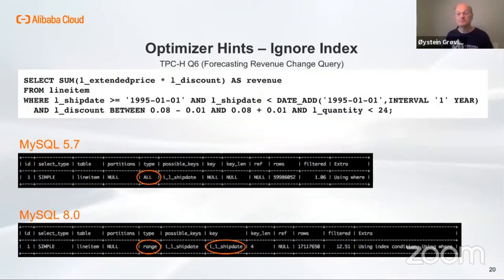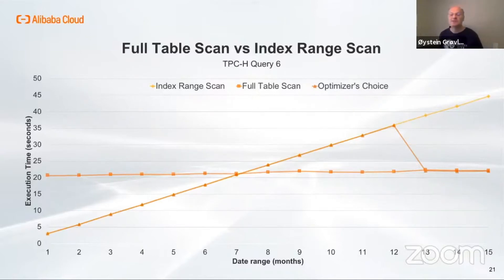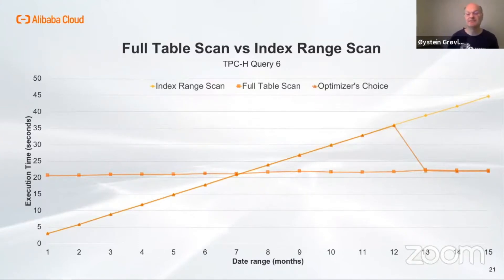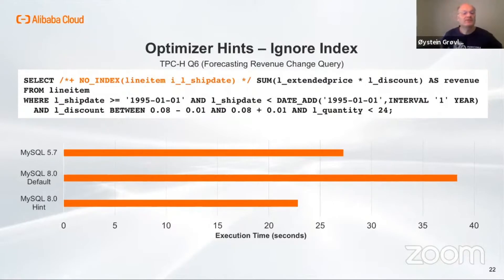One of the queries slower in MySQL 8 than 5.7 is query 6. The reason it's slower is because it's using an index range scan instead of a full table scan. As we see from the graph, index range scan is faster than a table scan if the range is smaller. In this case, the tipping point is when the date range is larger than seven months, which is around 8% of the total table size. However, the optimizer prefers index range scans up to about 12 months, and since the range for query 6 is one year, a very small change in estimates could cause the query to run 40% faster or slower. By adding an index hint to tell the optimizer to ignore the index for this query, we can actually get query 6 to perform better in 8.0 than it did in 5.7.